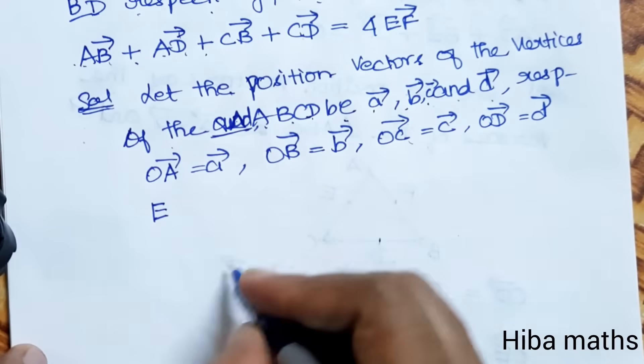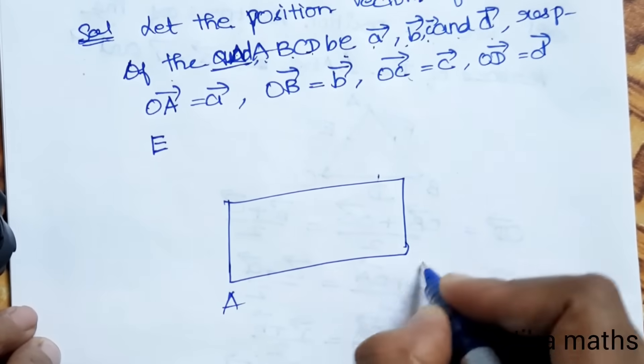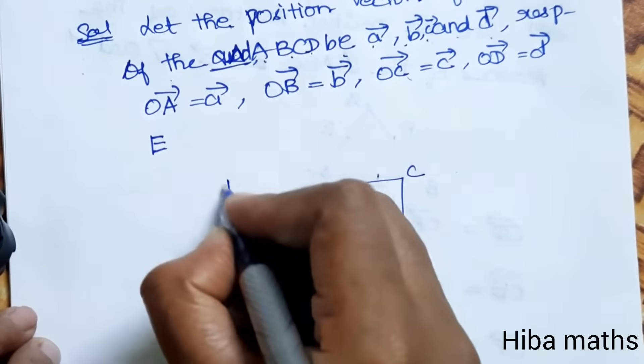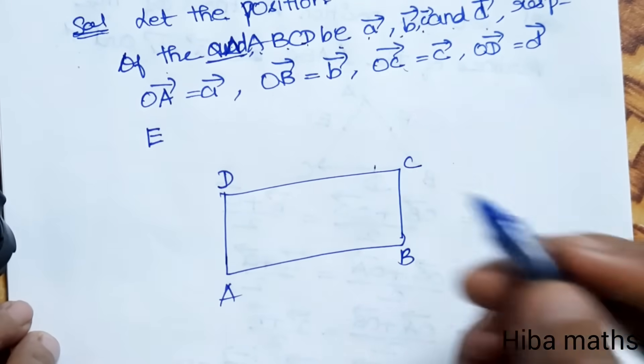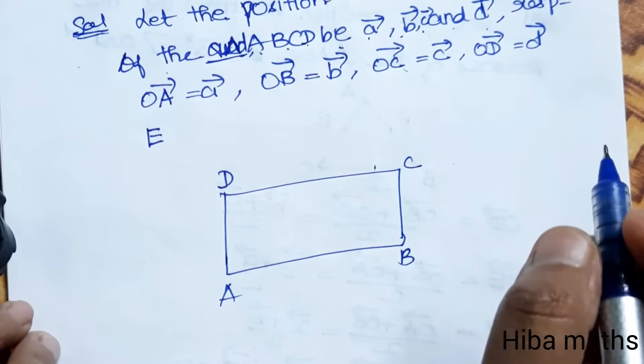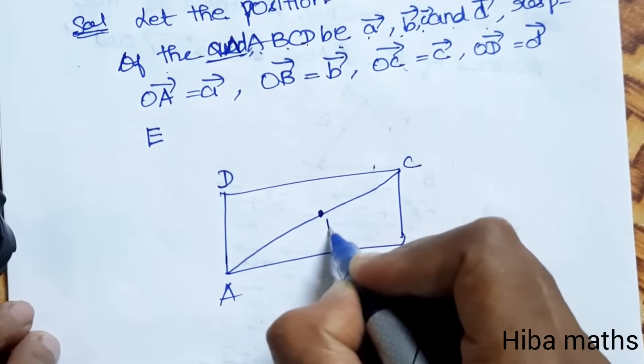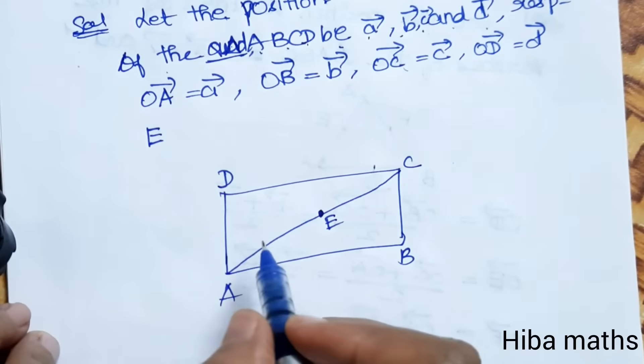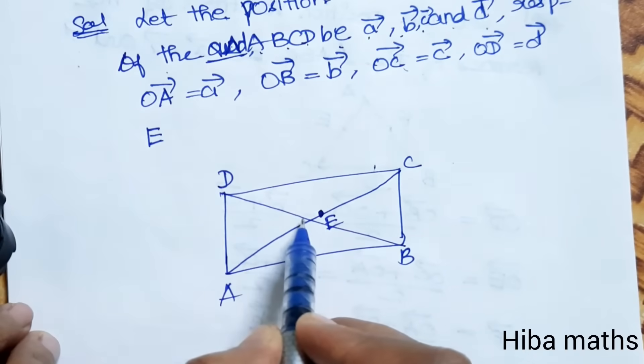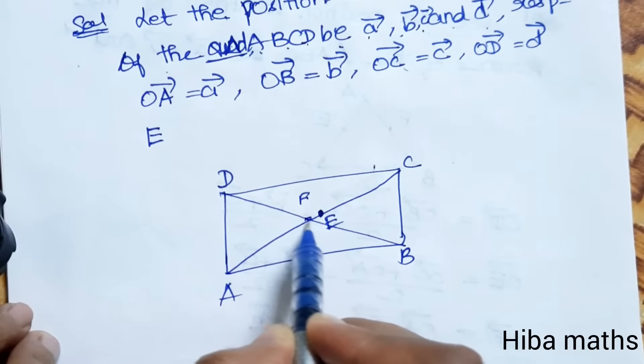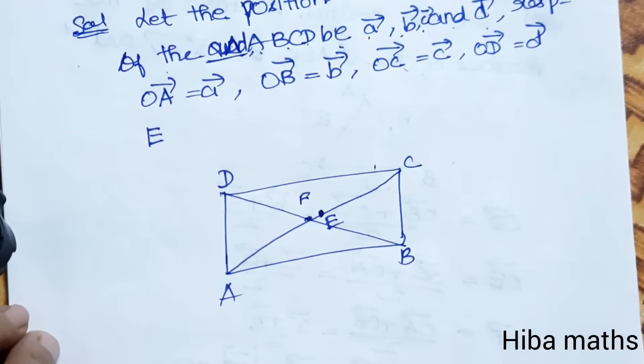Now let's take the diagonals. We can draw A, B, C, D. This is just a quadrilateral.